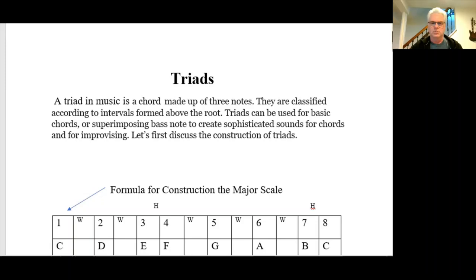So what are triads? A triad in music is a chord made up of three notes. They're classified according to the intervals formed above the root. Triads can be used for basic chords or superimposing bass notes to create sophisticated sounds for chords and also for improvising.